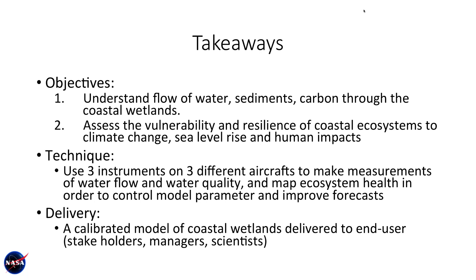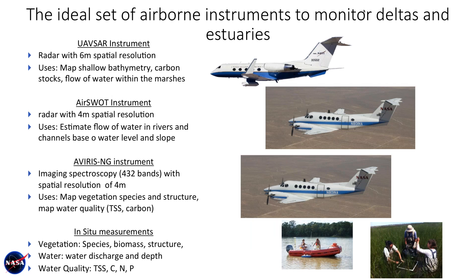Overall, we're trying to assess the vulnerability and resilience of these coastal ecosystems to climate change, sea level rise, and human impact — all driven by how water, sediments, and carbon flow through these wetlands. So we're trying to monitor that using remote sensing. For that, we have three instruments installed on three different aircraft, all flying simultaneously over the wetlands, each with a different measurement. This allows us to calibrate hydrology and ecosystem productivity models in the wetlands, and these calibrated models are expected to be delivered to end users — including stakeholders, managers, and other scientists.